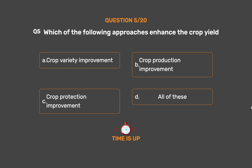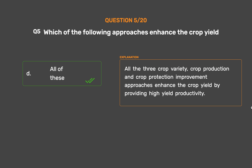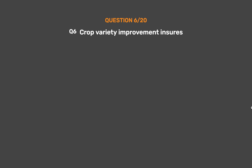The correct answer is Option D: All of these. All three — crop variety, crop production, and crop protection improvement approaches — enhance the crop yield by providing high yield productivity.